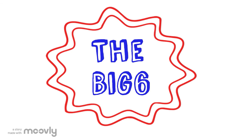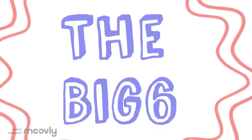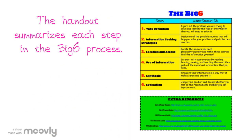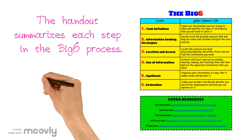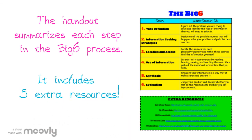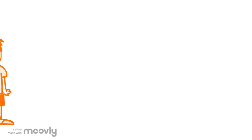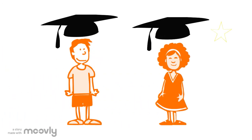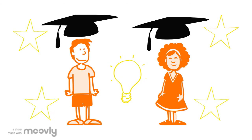So there you have it — all six steps in the Big 6 researching process. Remember that I also created a handout that summarizes each step in the Big 6 process. The handout also includes five extra resources that provide more information on the Big 6 research process. This is a very helpful handout that you can use at any time. Your teacher and I are here to help you as well — we want to see you succeed. Keep in mind that the Big 6 is a process that will help you research smarter, not harder, and I can't wait to see you all using it in the library.